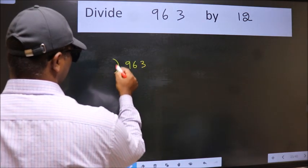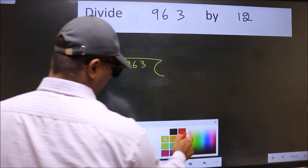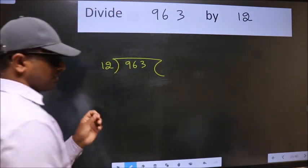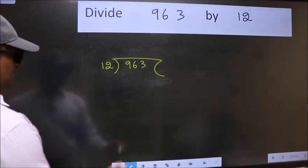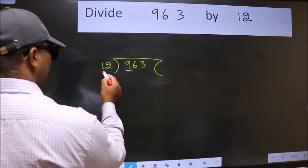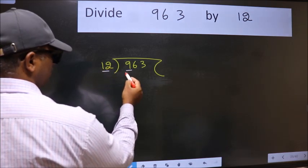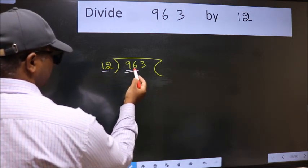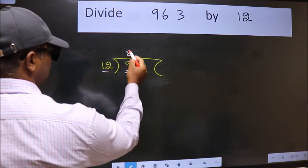963 here, 12 here. This is your step 1. Next. Here we have 9 and here 12. 9 is smaller than 12, so take two numbers: 96. When do we get 96 in 12 table? 12×8 is 96.